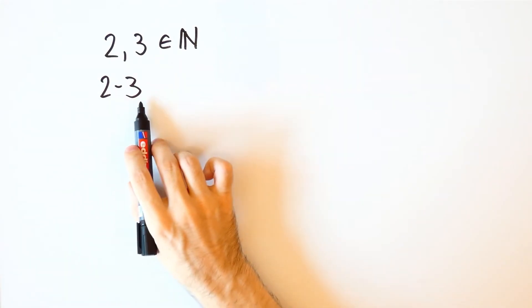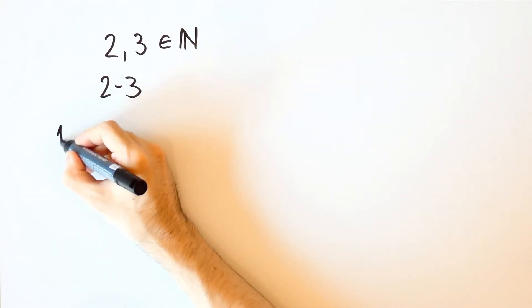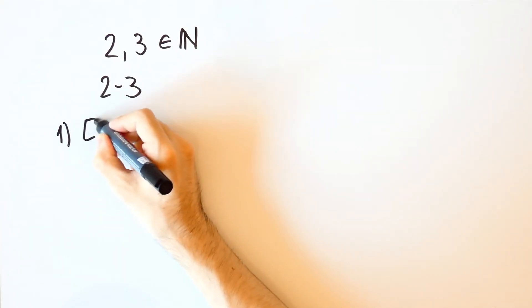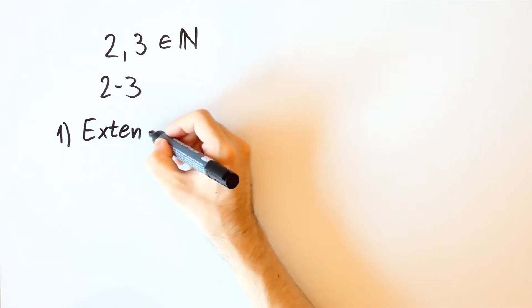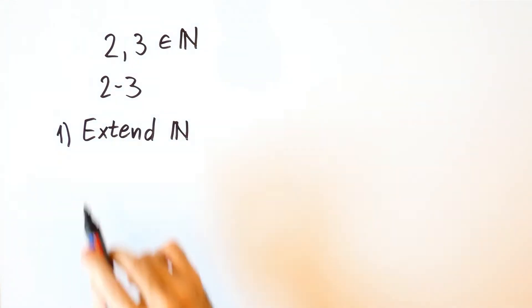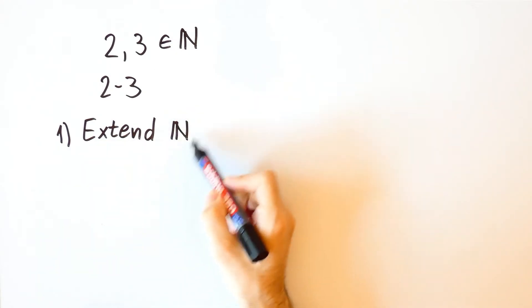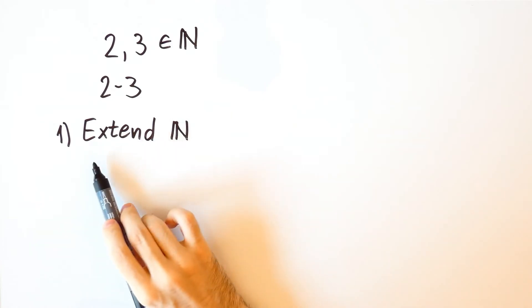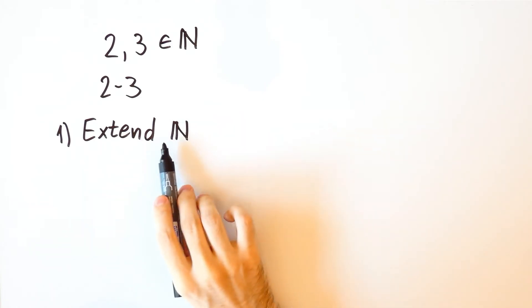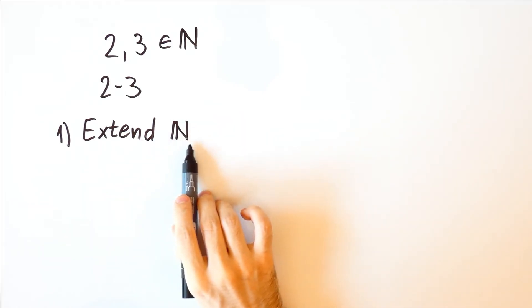In order to define it, we would have to extend the set of natural numbers. But what does this mean? Well, it means that we are no longer looking at the set of natural numbers, but we are looking at some other set that contains all natural numbers and also contains some other numbers.